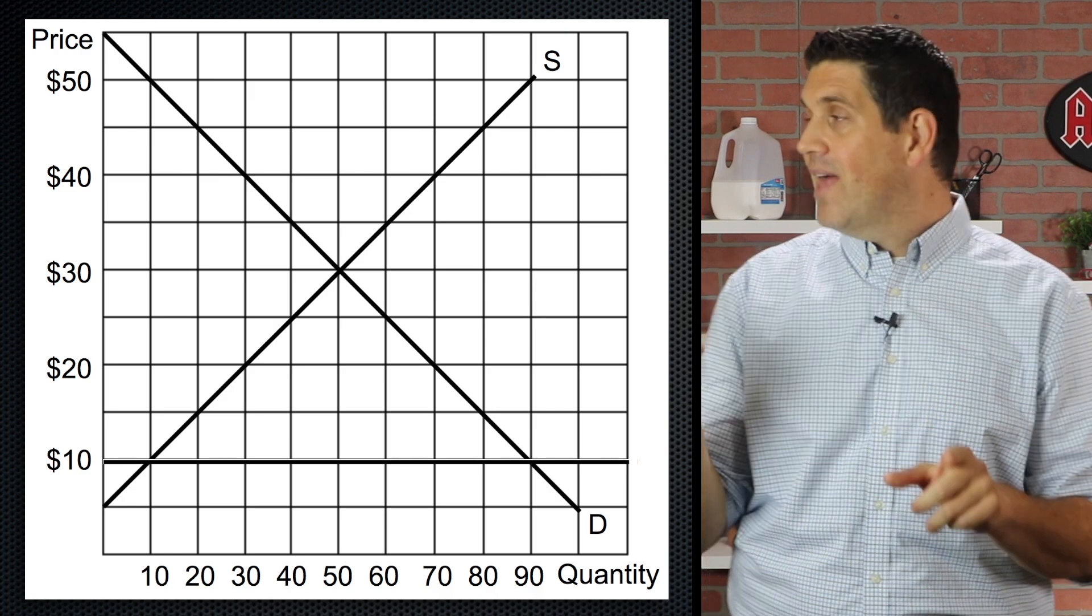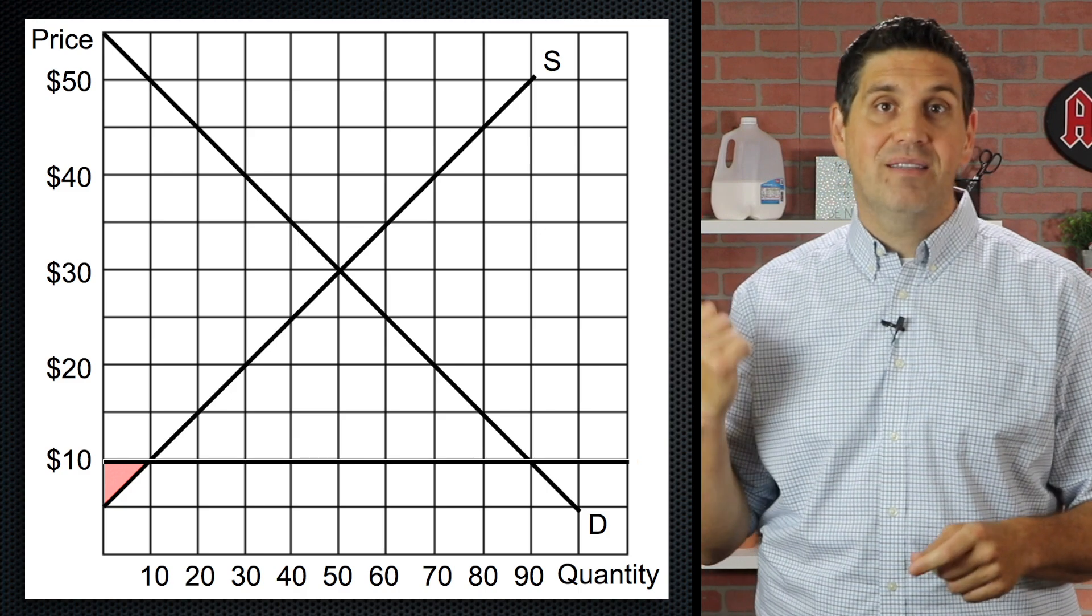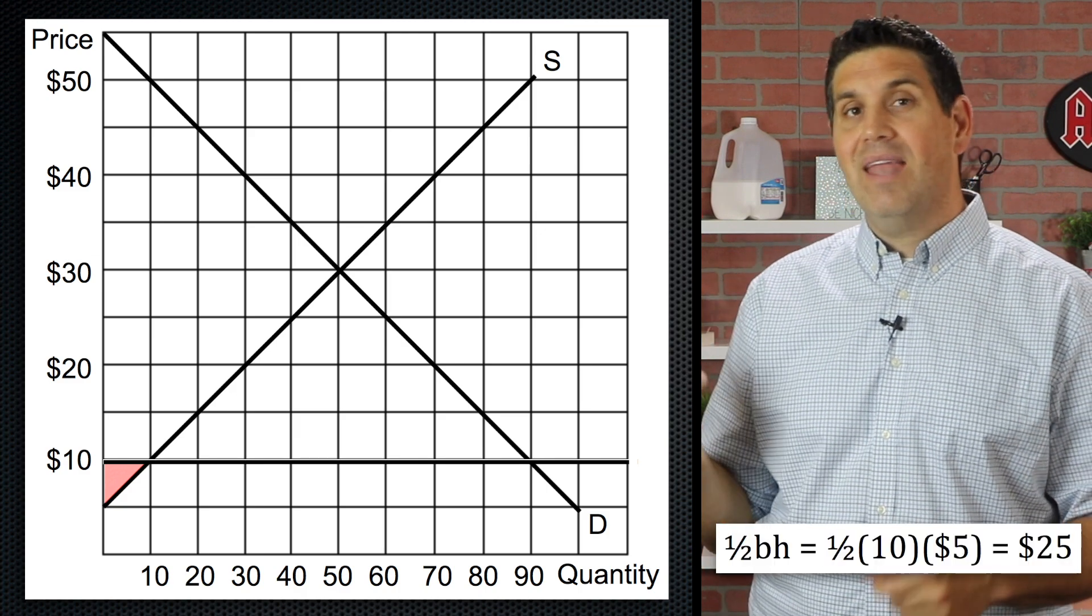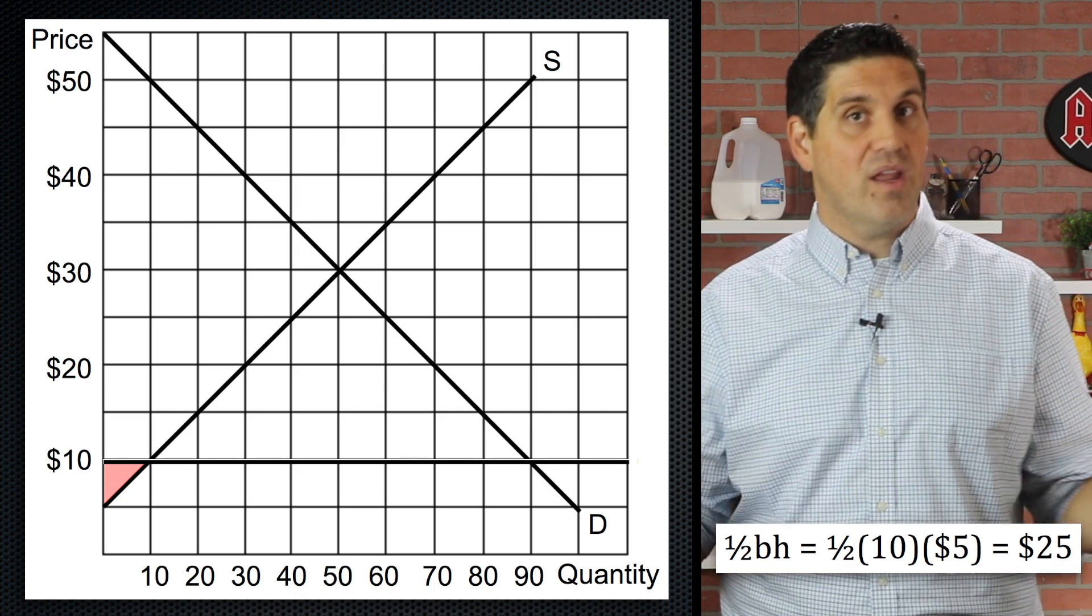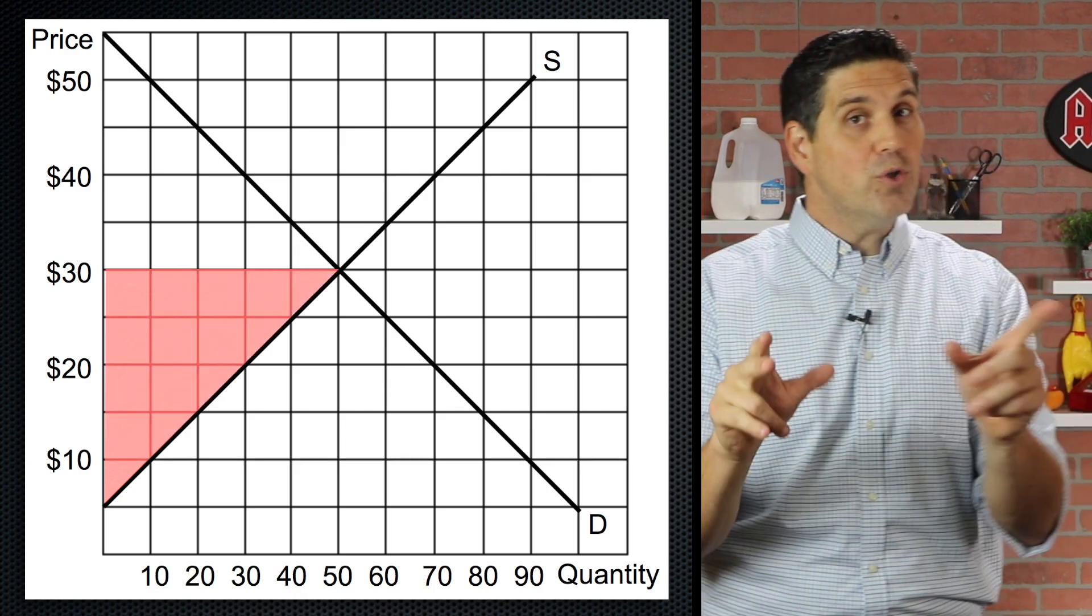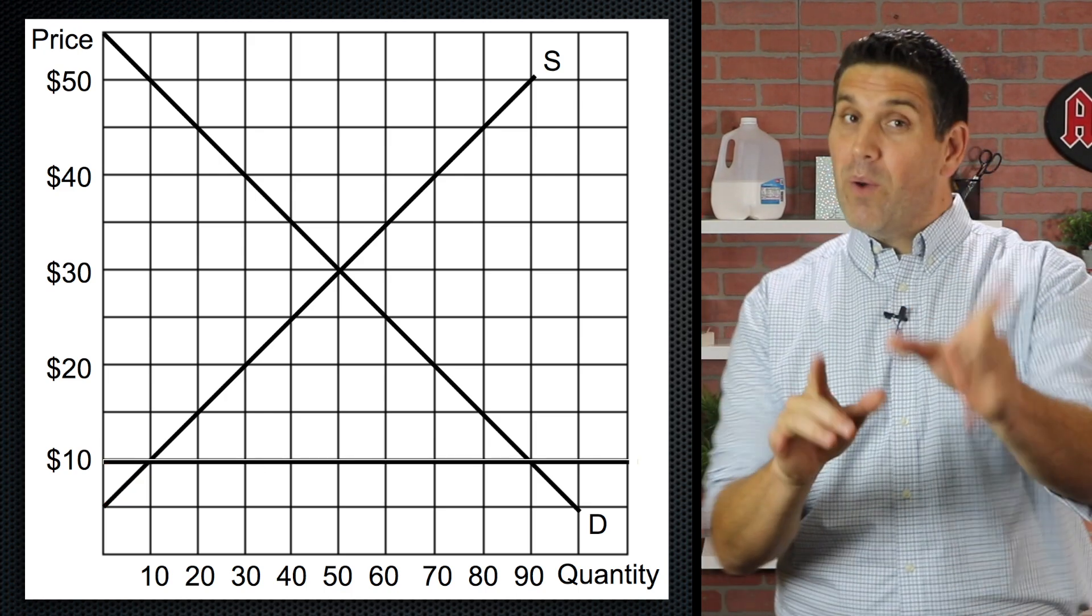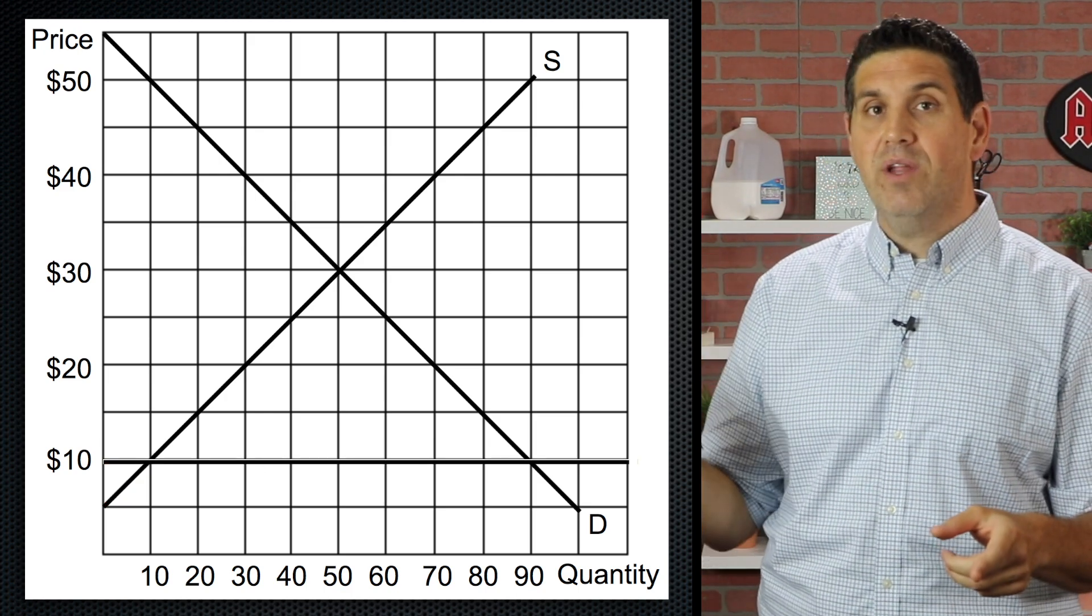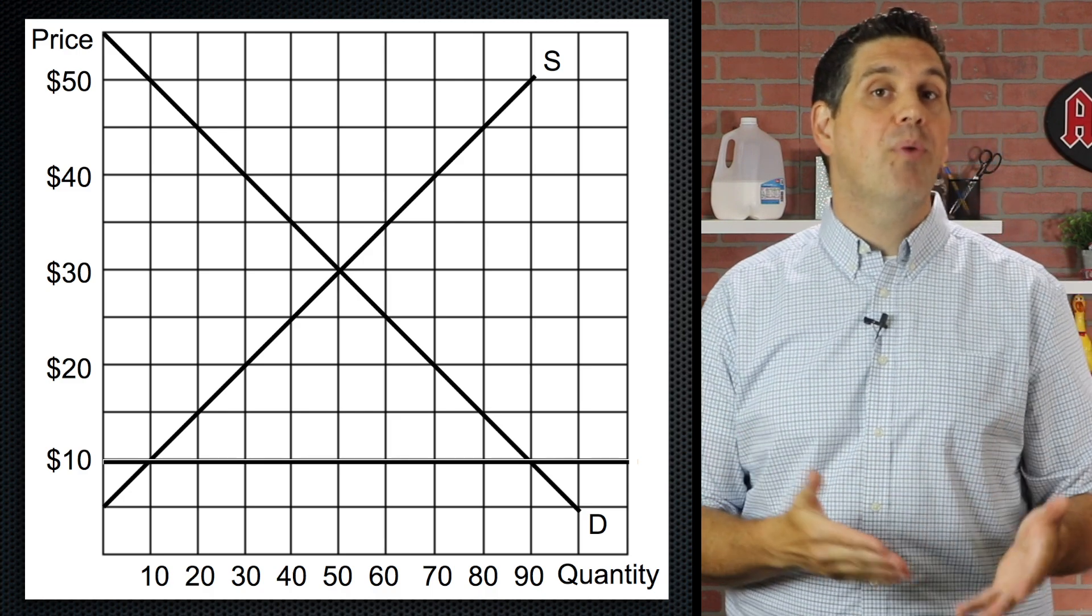If the price is at $10, the producer surplus will be right here and that's $25. Remember the equation is one half base times height. The base is 10. The height is 5. 5 times 10 is 50. Cut in half, 25 is producer surplus. So the producer surplus got smaller and it's actually the same if this was a price ceiling. But when there's a ceiling, we're only producing 10 units and there's a shortage. But in this case, we're filling the shortage with imports.